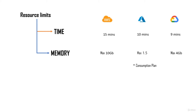The same is true for memory. The maximum memory AWS allocates for a Lambda function is 10 GB. For Azure it's 1.5 GB, and for GCP it's 4 GB. These are limits that will keep changing — if you see different numbers in the slides, those numbers have probably been updated. The time limit and memory limits should keep increasing over time.